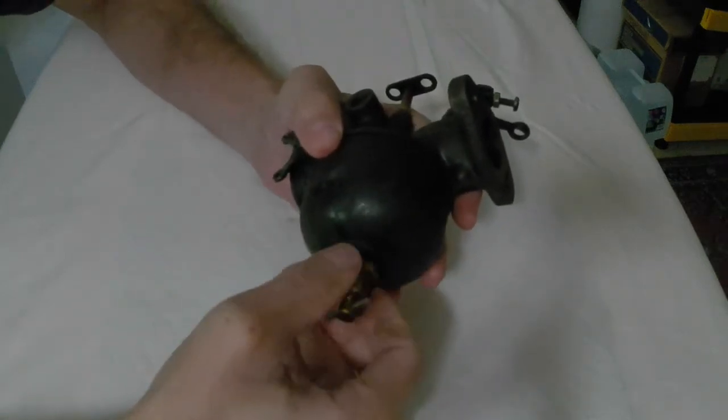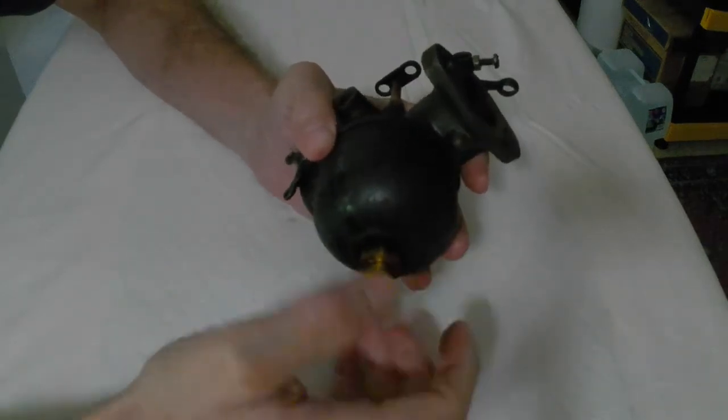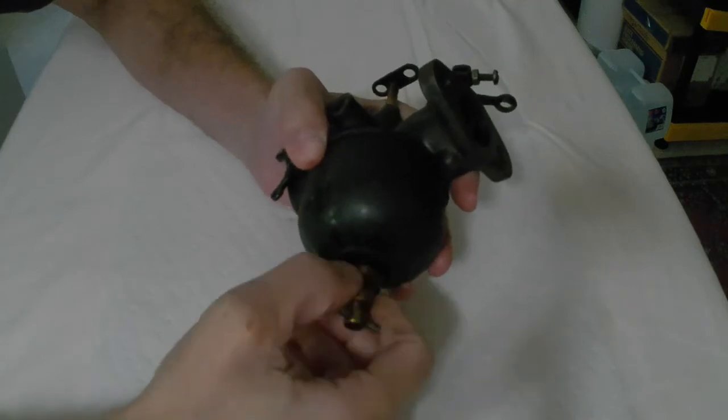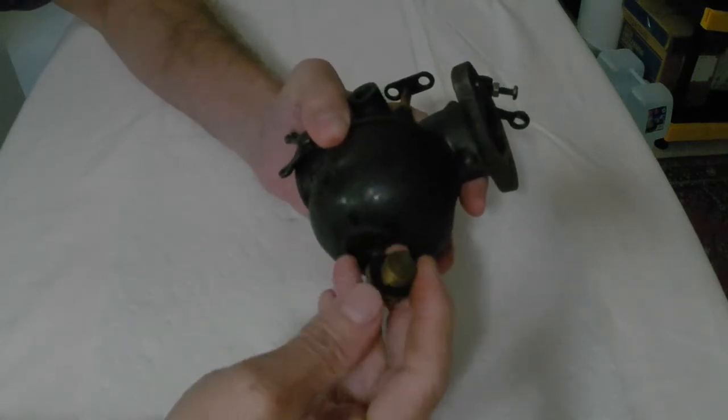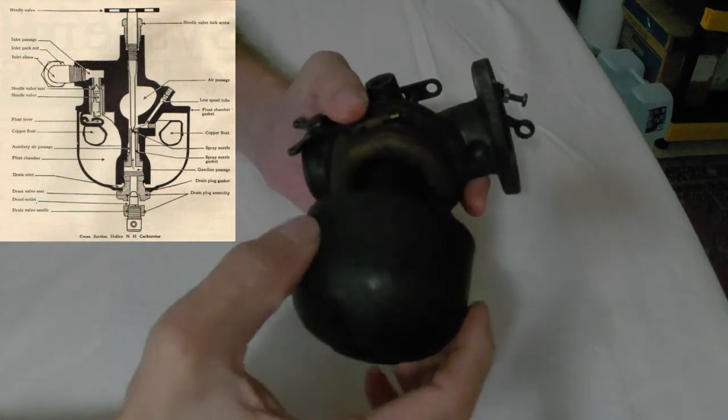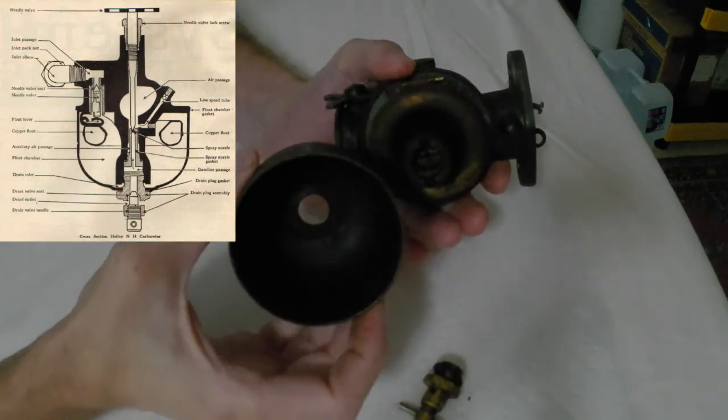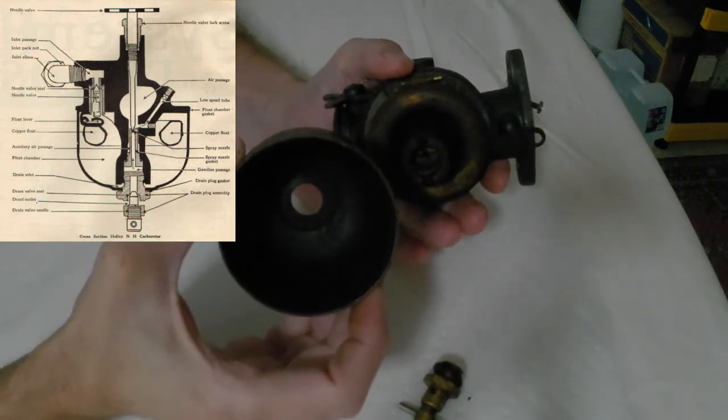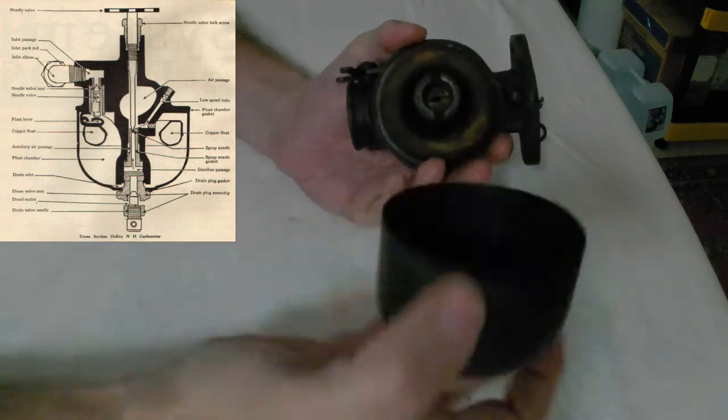Now a couple of things you want to look at when you buy these or when you find them - you take this off with a three-quarter inch wrench. There are a couple of key things that you want to look for. You want to look for rust in the bowl, which this one has none.